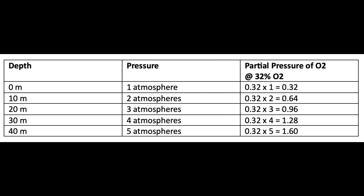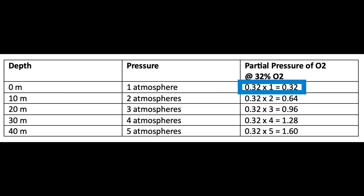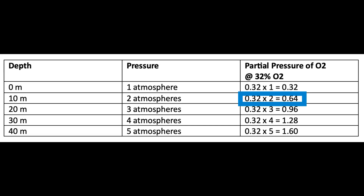If you are diving with a standard 32% nitrox — meaning 32% oxygen and the rest nitrogen — you do that because it reduces your decompression risk, which is great. But it does increase your CNS toxicity. The partial pressure of O2 for a 32% blend: at zero meters, one atmosphere, it is obviously 0.32. At 10 meters, you are under two atmospheres, so you double it to 0.64. At 20 meters, three atmospheres, you end up at 0.96, and so on.